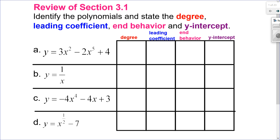Hello, Matthews Gatos here. In this video, we're going to cover section 3.4, but before we do that, I want to review section 3.1. So looking at these four examples here, I want to identify which ones are the polynomials, and for the ones that are polynomials, I want to state the degree, the leading coefficient, the end behavior, and the y-intercept.